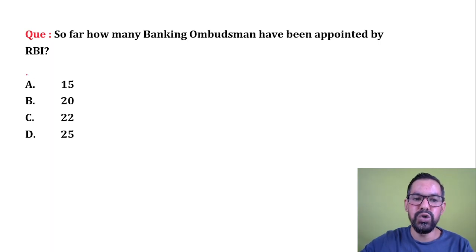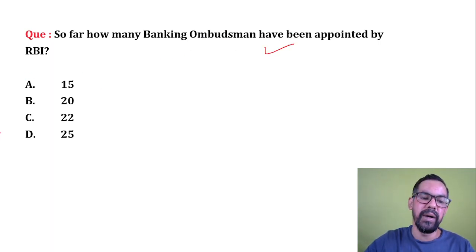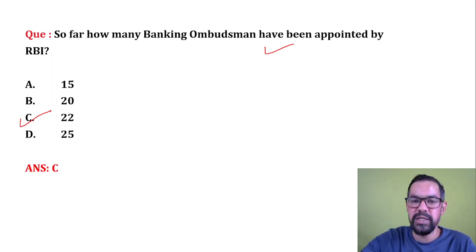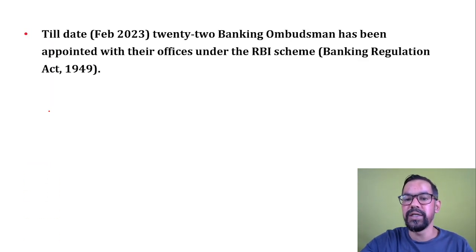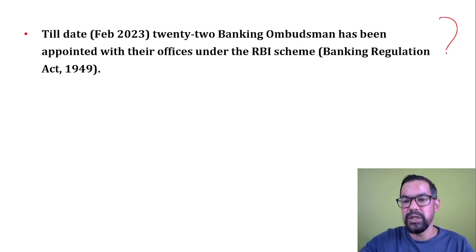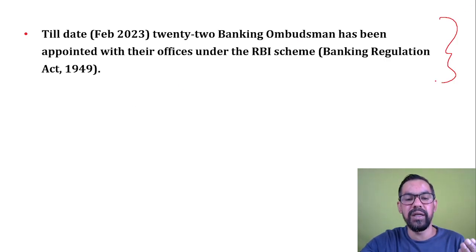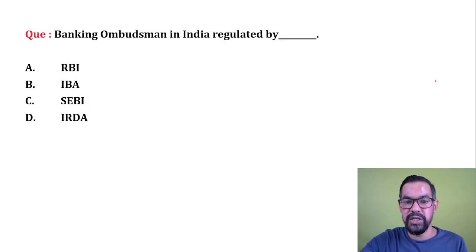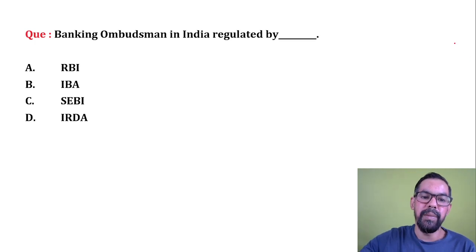Next question: How many Banking Ombudsmen have been appointed by RBI? The answer is 22. Across the country we have 22 ombudsman offices, and now these Banking Ombudsmen also handle cases of NBFCs and digital transactions as part of the Integrated Ombudsman Scheme.